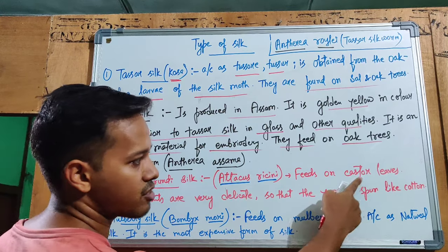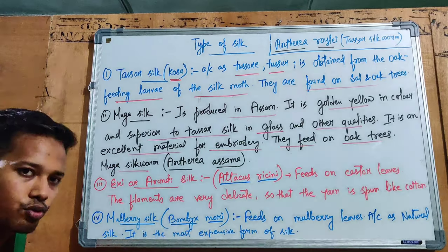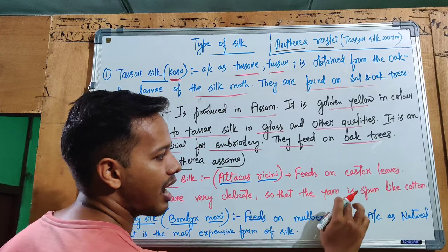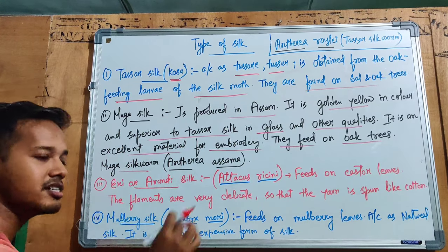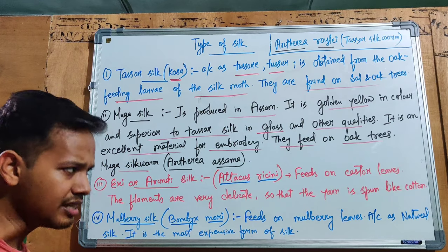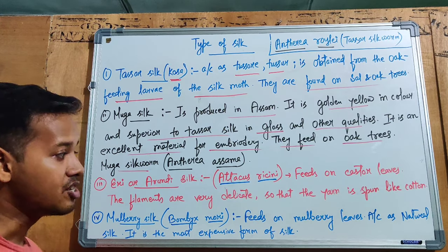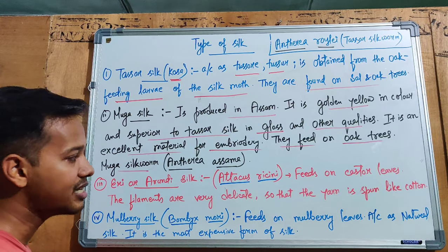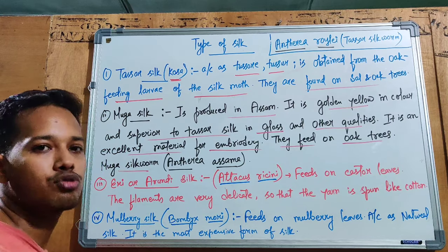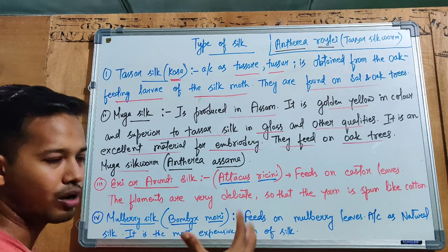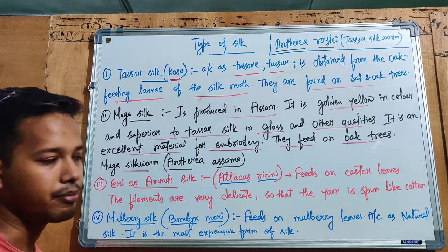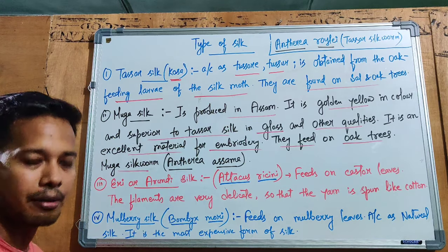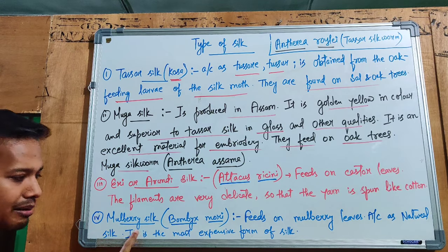Eri silk, also called hair silk, feeds on castor plant leaves. The filaments are very delicate, so the yarn is spun like cotton. This hair silk is the cheapest type of silk. Its tensile strength and shine are very poor compared to other types.